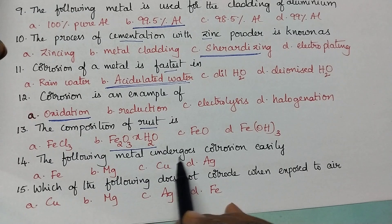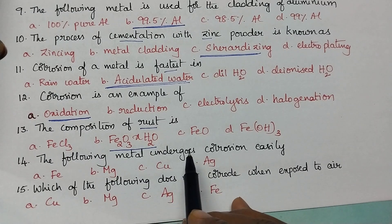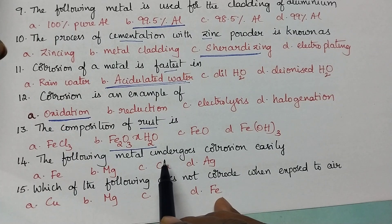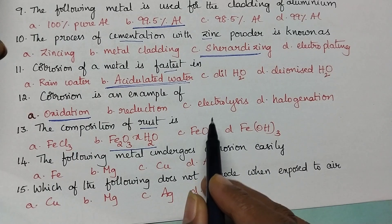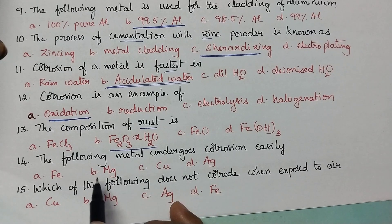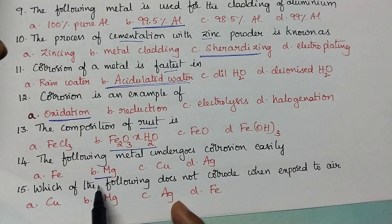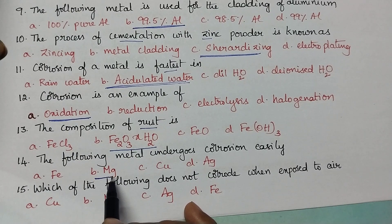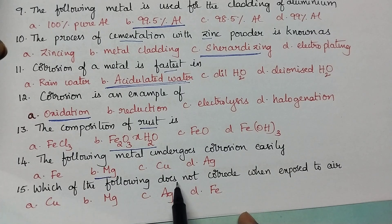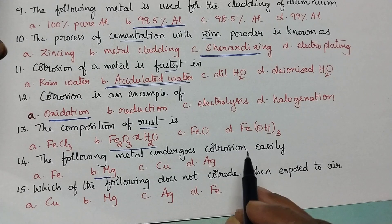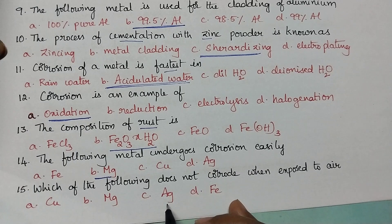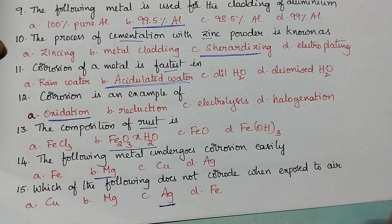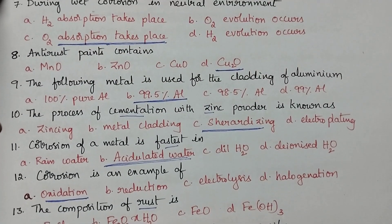The metal that undergoes corrosion most easily can be predicted from the electrochemical series — the metal higher in the series corrodes more readily. So magnesium, being higher in the electrochemical series, undergoes corrosion most readily. Noble metals such as gold, silver, and platinum do not undergo corrosion when exposed to air; silver is the right option.